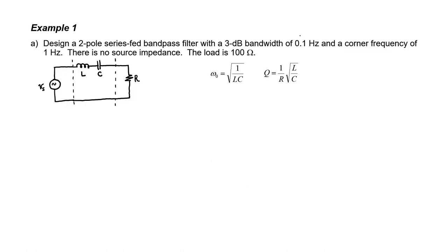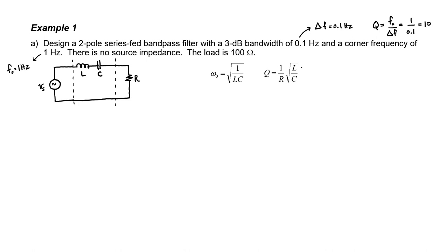We're told that the 3 dB bandwidth is 0.1 Hz — let's label that as delta-F. We're also told that the corner frequency is 1 Hz — let's label that as F-naught. Since we know both the bandwidth and the corner frequency, we can calculate the quality factor Q. Using the 3 dB bandwidth and the corner frequency, we find that the quality factor is 10. We have an equation that relates the quality factor to R, L, and C, so this is also 10.